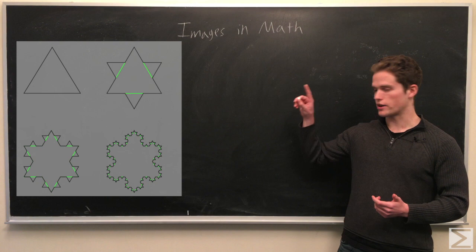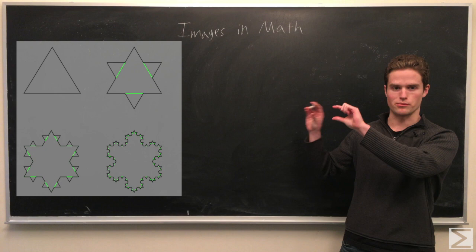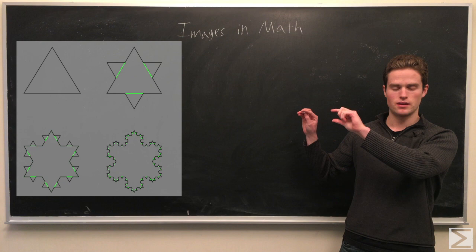We take a triangle, and then every middle third of each edge we remove, and then we put an equilateral triangle on top of that removed part. And then each edge we have after that, we do the same procedure, and we just do that infinitely.